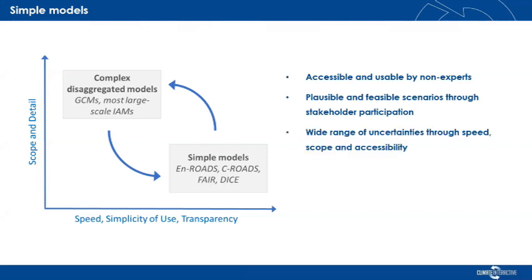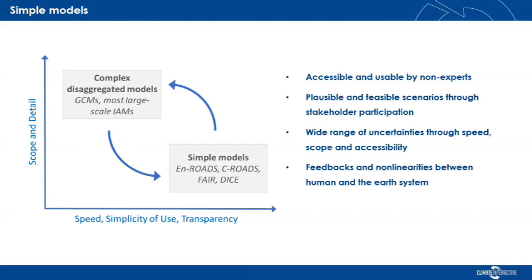Because of the scope, speed, and accessibility, it allows covering a wide range of uncertainties if we would like to run that kind of analysis. Also, the scope and the modeling approach behind it — system dynamics — allows integrating many more feedbacks and non-linearities that we have in real life between the human and earth system.